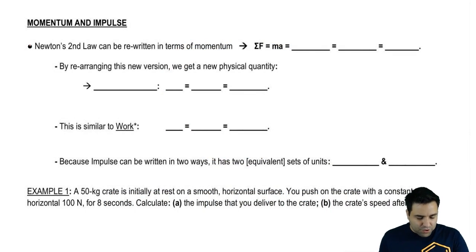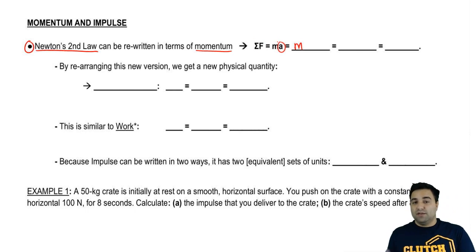So first I want to show you that Newton's second law, F = ma, can be rewritten in terms of momentum. Check this out. So sum of all forces equals ma. Instead of writing a, I'm going to write the definition of a, which is changing velocity over changing time. So I'm going to replace it here, delta v over delta t.